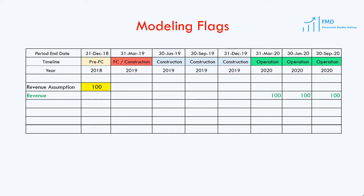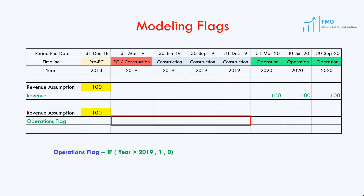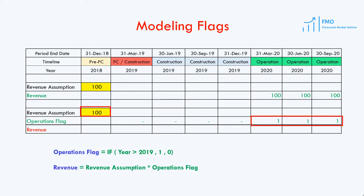So here we can benefit from creating a flag. The operations flag can be created by using a simple IF function, saying if the year is greater than 2019, then give me 1, otherwise give me 0. We will get 0 in cells during the construction period and 1 during the operations period. We will then simply multiply our revenue assumption by the flag to give us the revenue projections.